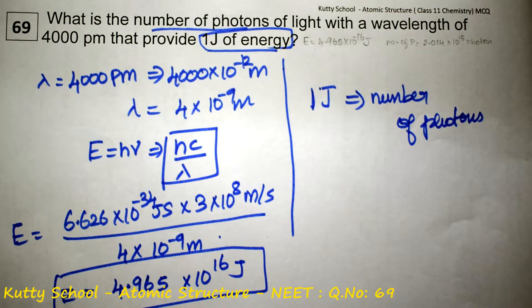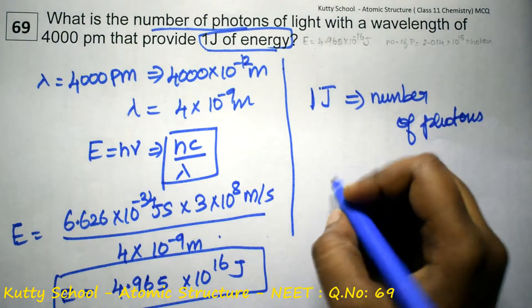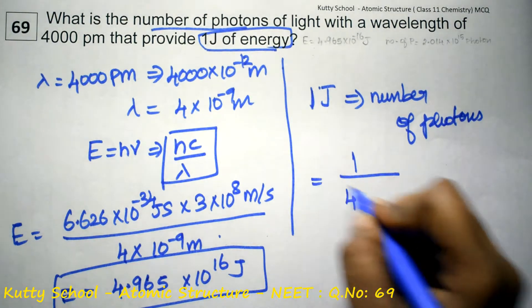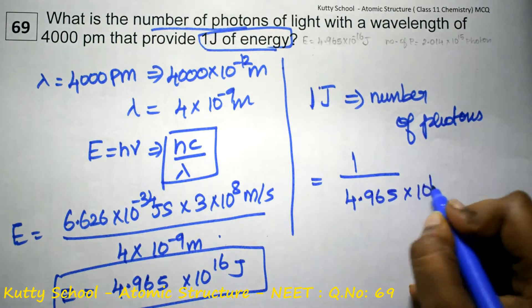So if 1 photon has this much energy, then number of photons will be 1 by this energy. So that is equal to 1 over 4.965 into 10 power minus 16 joule.